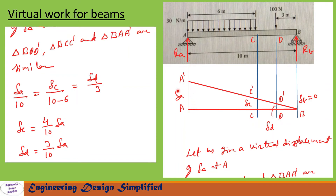Now to find reaction at A (RA), let us give a virtual displacement of delta_A at A. The beam will assume the position B, D', C', and A'. We have similar triangles: B-D-D', B-C-C', and B-A-A'. Displacements are delta_A, delta_C, delta_D, and delta_B = 0.